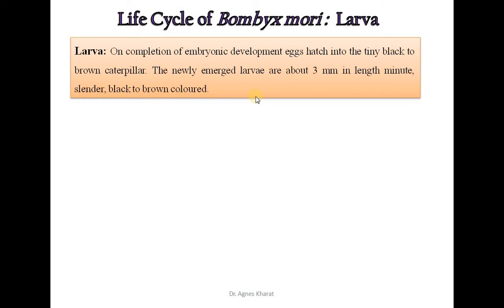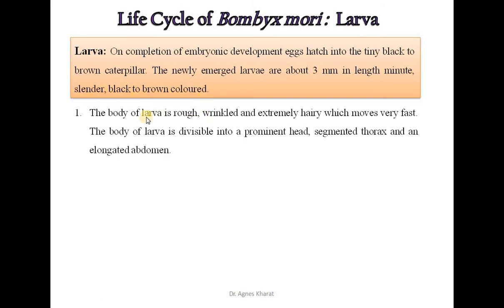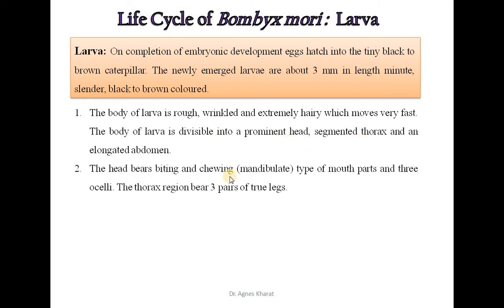The next stage of the life cycle is larvae. On completion of embryonic development, eggs hatch into tiny black to brown caterpillars. The newly emerged larvae are about 3 mm in length — minute, slender, black to brown in colour. The body of the larva is rough, wrinkled and extremely hairy and moves very fast. The body of the larva is divisible into a prominent head, segmented thorax and an elongated abdomen. The head bears biting and chewing (mandibulate) mouthparts and trisoceline.